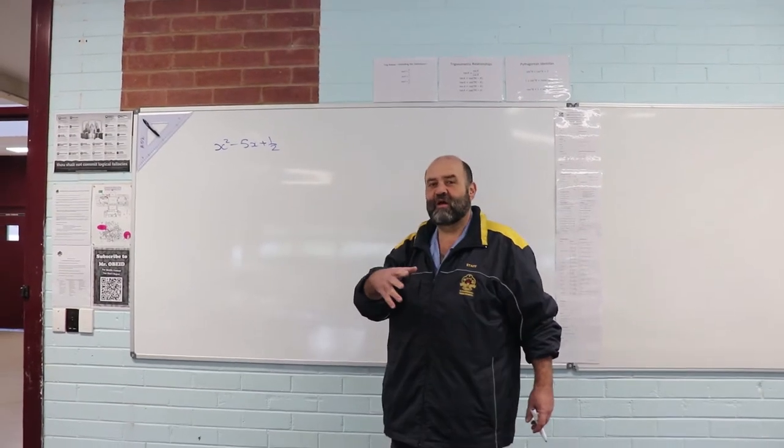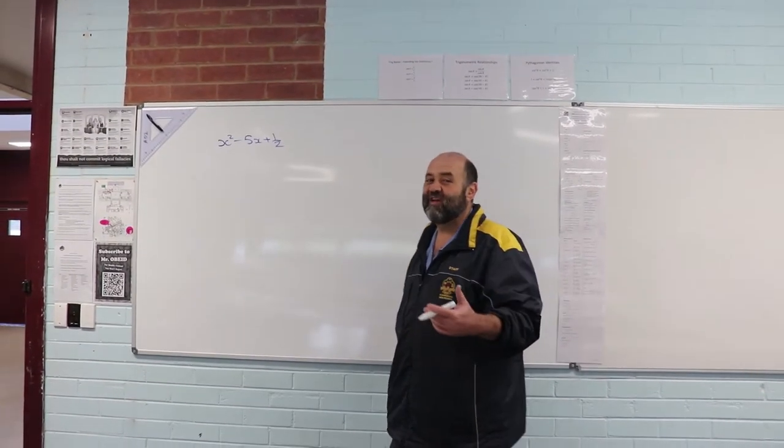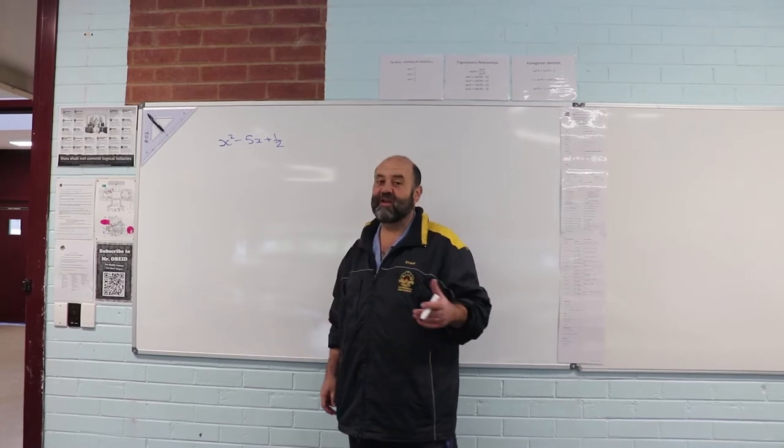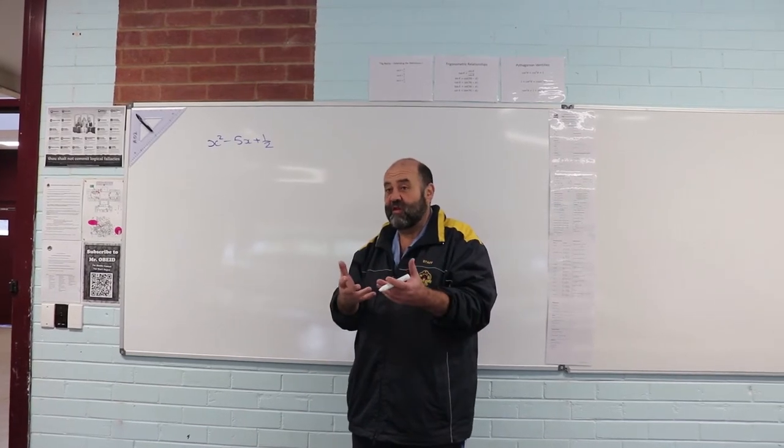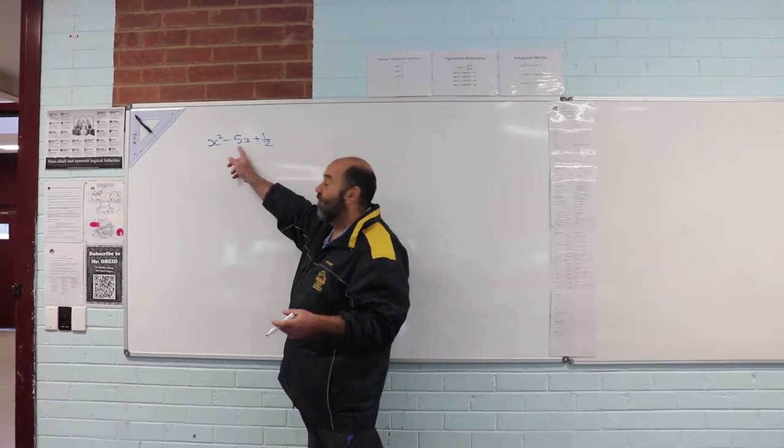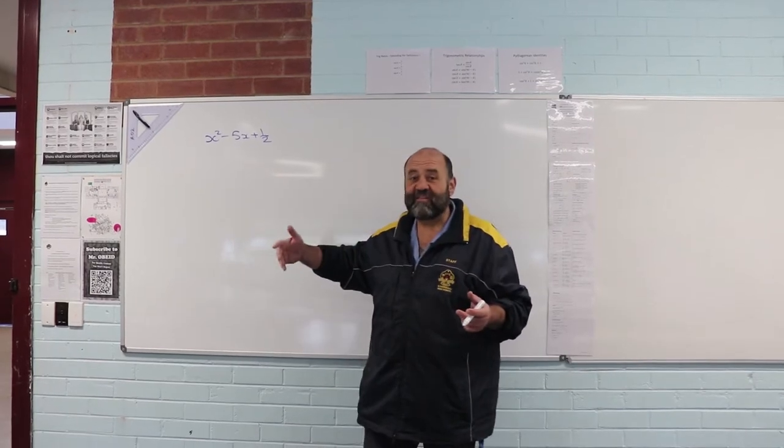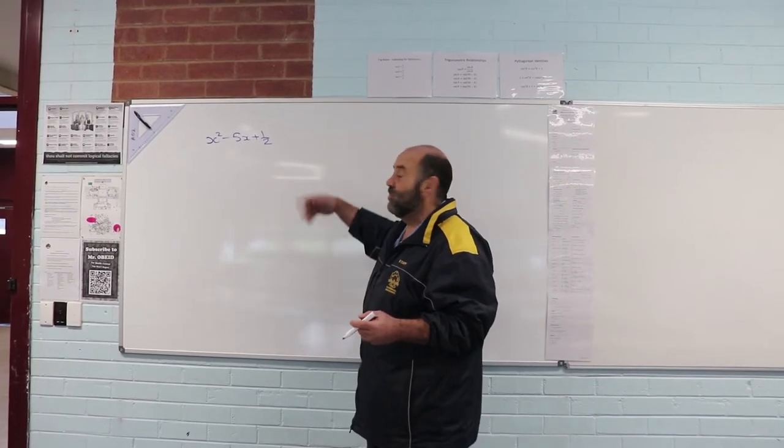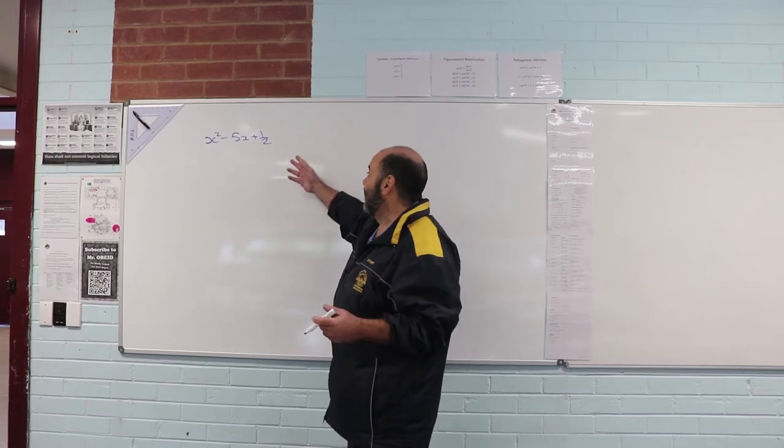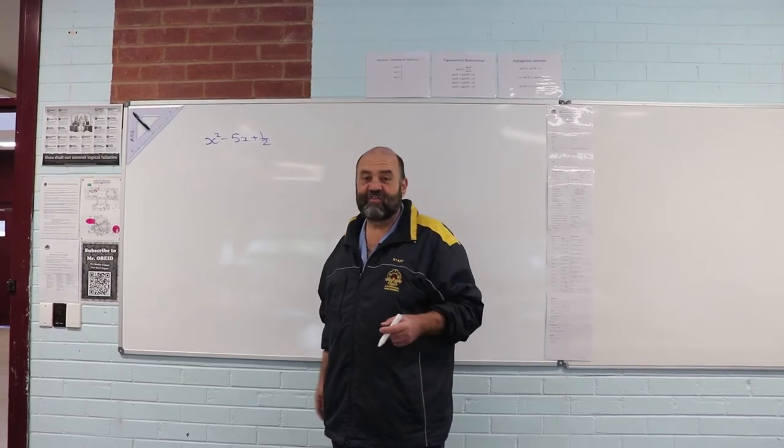I was asked to do an example from question 7, exercise 8e, on completing the square. Question 7 is the first time we've got an odd number as the coefficient of x, and just for good measure I picked one where there was a fraction as the constant term as well.